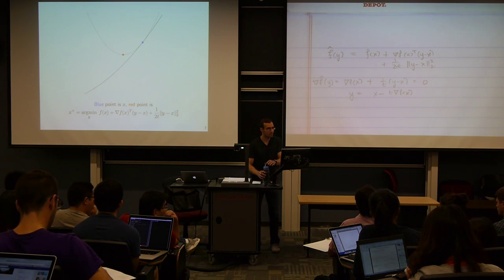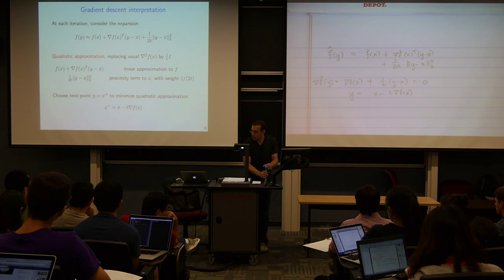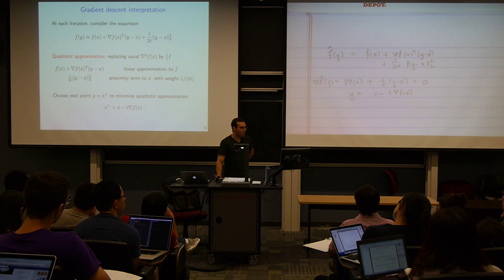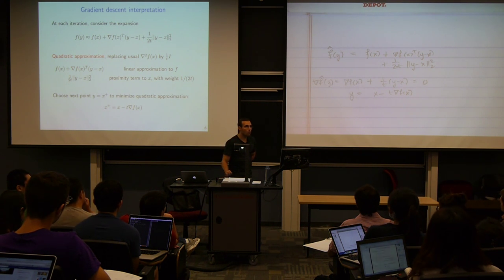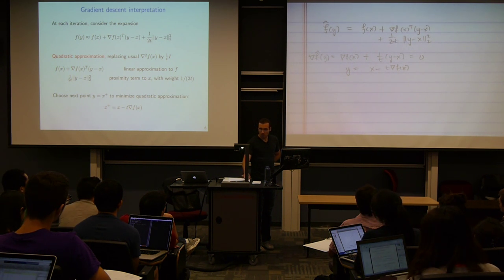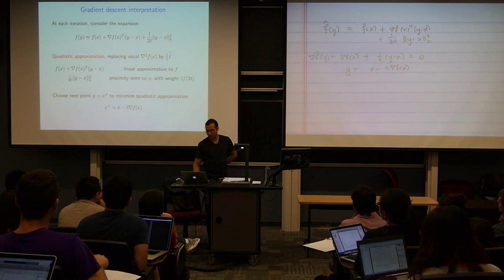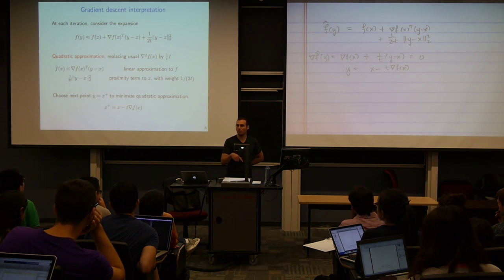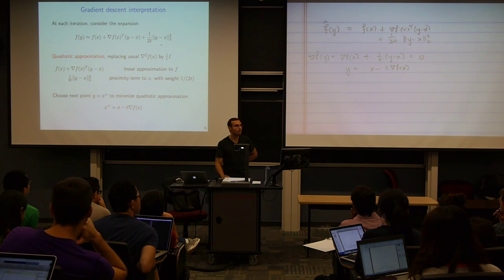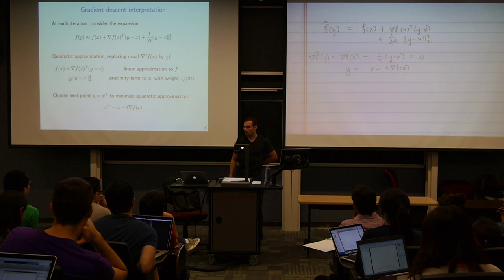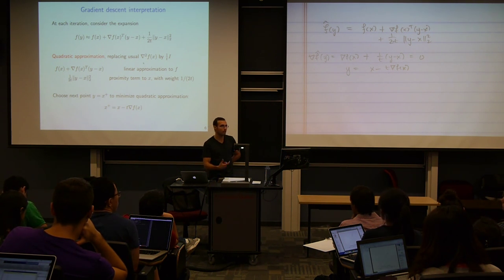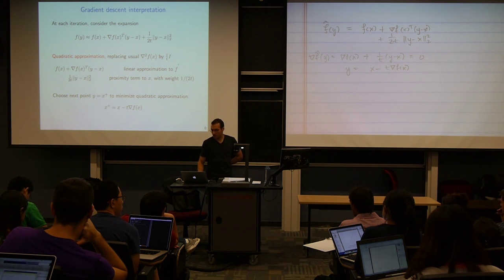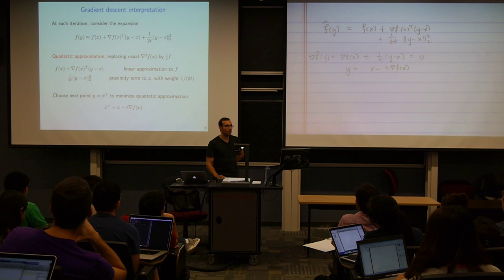Question about why we can replace the Hessian by (1/t) times the identity: the reason gradient descent is tractable is that we use this simple spherical matrix. If instead we used the actual Hessian of f, the resulting algorithm would be Newton's method — a second-order method that requires inverting the Hessian, making it much more costly. The identity is used for computational simplicity.